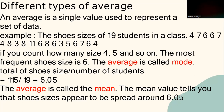The shoe size of 19 students in a class are shown as: 4, 7, 6, 6, 7, 4, 8, 3, 8, 11, 6, 8, 6, 3, 5, 6, 7, 6, 4. If you count how many size 4, how many size 5, and so on, you will find that the most frequent shoe size in the class is 6. This average is called the mode.